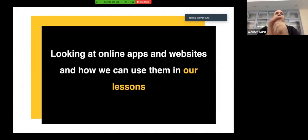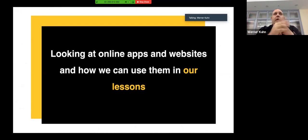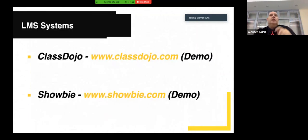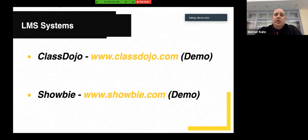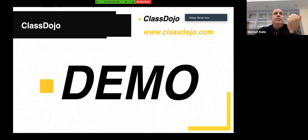Now let's have a look at some of the apps and websites that can make your life easier while teaching online. This list can be divided into three sections: LMS, apps, and websites. When using an LMS, you should get permission from the parents first — many of these websites have permission slips you can download and send to parents, since you'll be putting students' work and pictures onto the platform. The first one I want to share is Class Dojo.